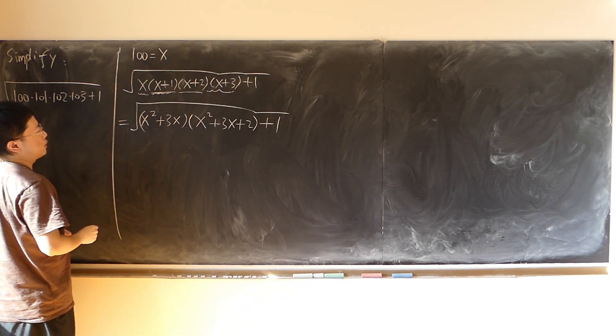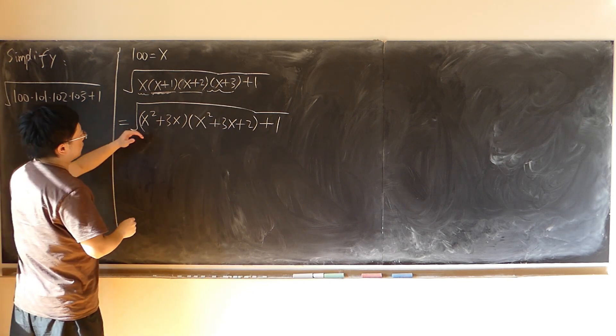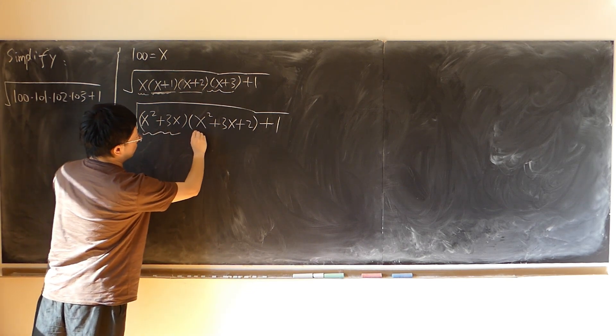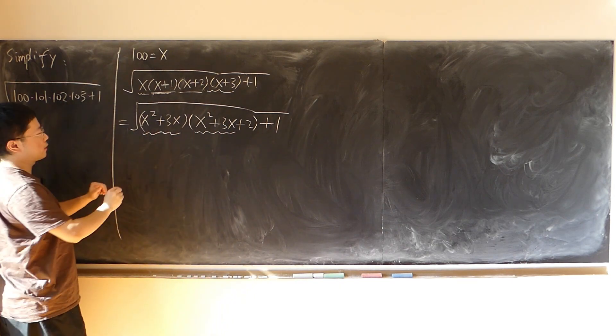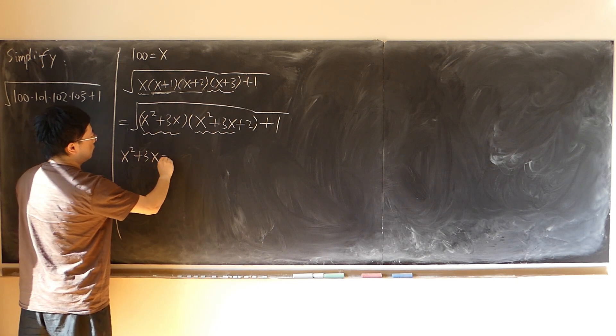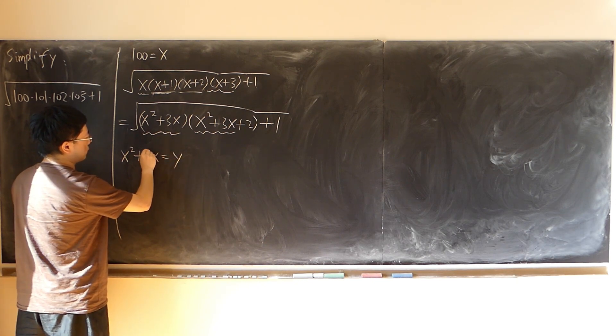I can observe again: x squared plus 3x, the same thing here, x squared plus 3x. As a whole entity, I can make substitution x squared plus 3x equal to y.